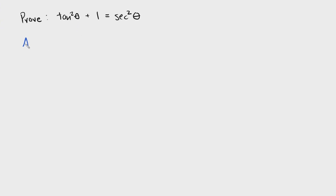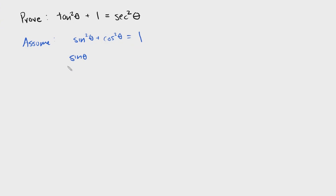The very first step is to assume this trig identity already. We're going to say: assume that sine squared theta plus cosine squared theta equals one. We're also going to need to know that sine theta over cosine theta equals tangent theta. Once we have that, we can actually start proving that this right here is true.